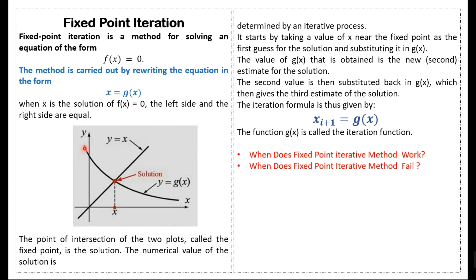Suppose we have a function f(x) and we rewrite f(x) = 0 in the form x = g(x). Then we plot y = g(x) and also plot the straight line y = x. The point of intersection of these two curves is our solution.